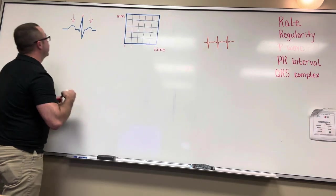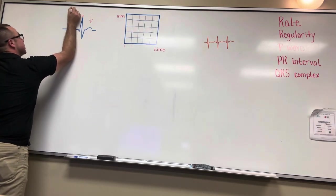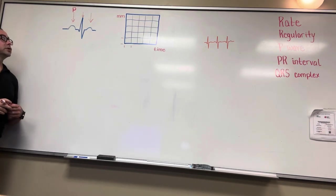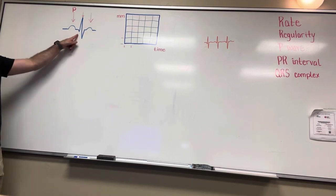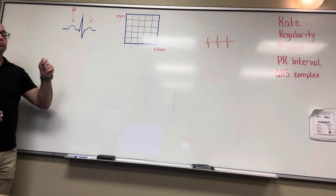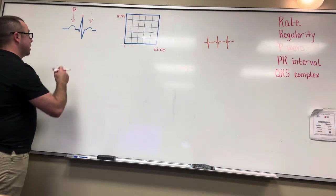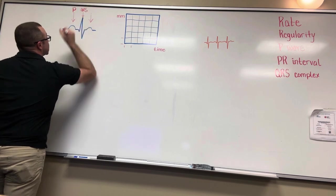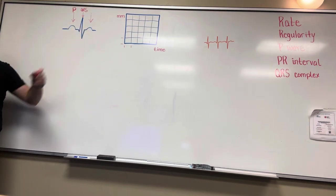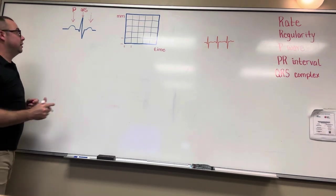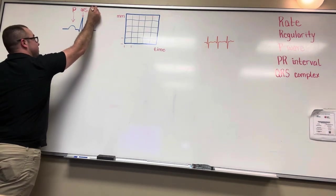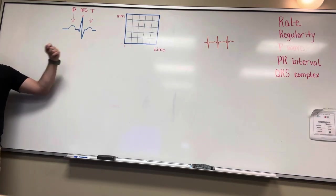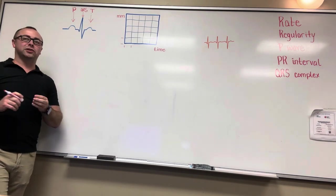So we've got our P wave, and that is atrial contraction. What's this next thing? QRS complex. Yes. So it went from a wave to a complex. How about this last one? T wave. That is right. So what is your QRS signifying? What's happening? QRS is ventricular contraction. That's right. How about the T wave? It's ventricular relaxation — or repolarization.